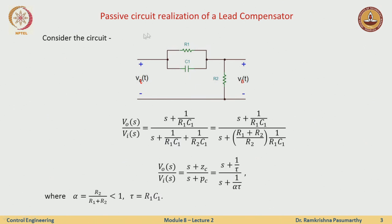Before we proceed we will see how we can realize or construct the lead compensator with basic circuit elements. If we take resistors R1, R2 and capacitor C1, apply an input voltage and measure the output voltage across R2, then Vo over Vi has the construction of a zero and a pole. Here alpha is R2 over (R1 + R2), which is clearly less than 1, and tau is R1·C1. Alpha being less than 1 ensures that the pole is to the left of the zero. This is how we construct a lead compensator, which has some angle and gain contribution due to the dynamic element C1.